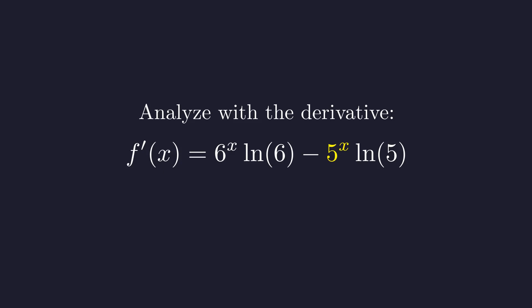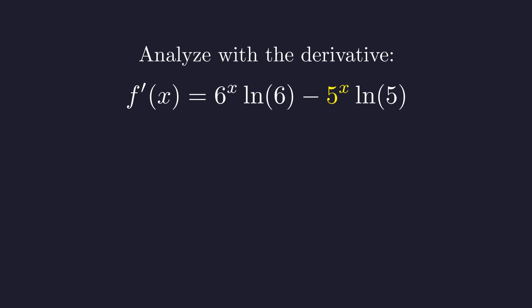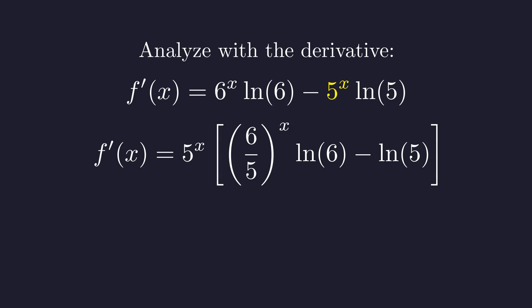Now to figure out whether this derivative is positive or negative, let's factor out 5 to the power of x. This factorization reveals the structure we need to analyze the sign. The first thing to notice is that 5 to the x is always positive, no matter what real value x takes. Inside the brackets we have six fifths raised to the power x. Since we're considering positive values of x and six fifths is greater than one, this term will always be greater than one.